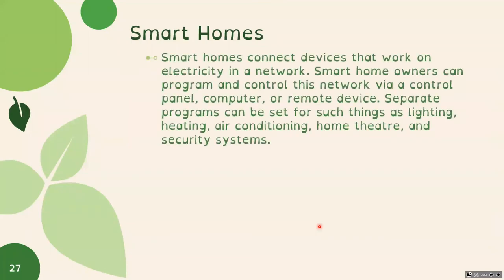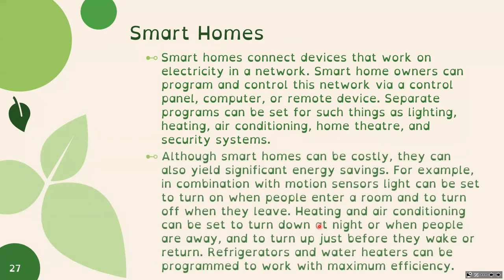Smart homes connect devices that work on electricity in a network. Smart home owners can program and control this network via a control panel, computer, or remote device. Programs can be set for such things as lighting, heating, air conditioning, home theater, and security systems. Although smart homes can be costly, they can yield significant energy savings. For example, in combination with motion sensors, lights can be set to turn on when people enter a room and off when they leave. Heating and air conditioning can turn down at night or when people are away, and turn up just before they wake or return. Programming your house to do some of this can really save energy in the long run.